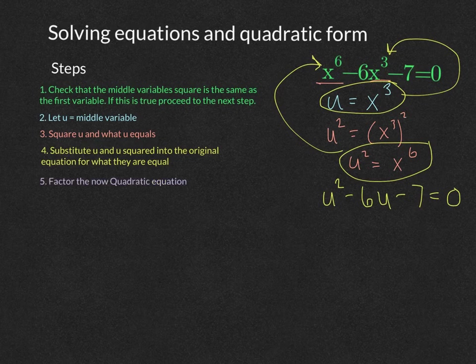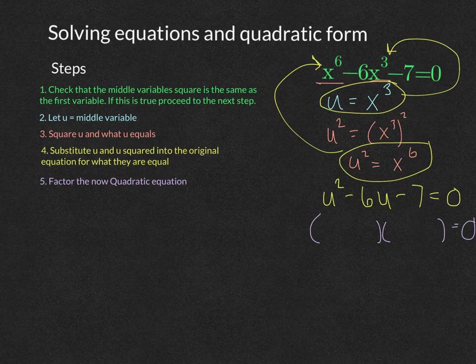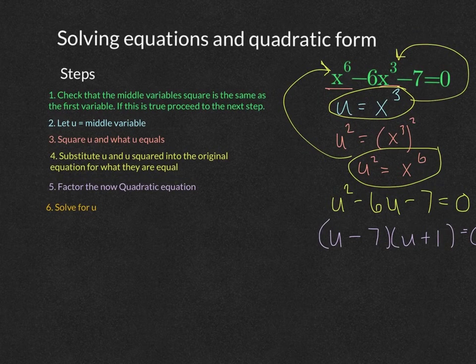The next step is to factor this quadratic equation. We're looking for factors of seven that add or subtract to give six, so we get (u minus 7)(u plus 1). Solving for u gives u equals 7 and u equals negative 1.